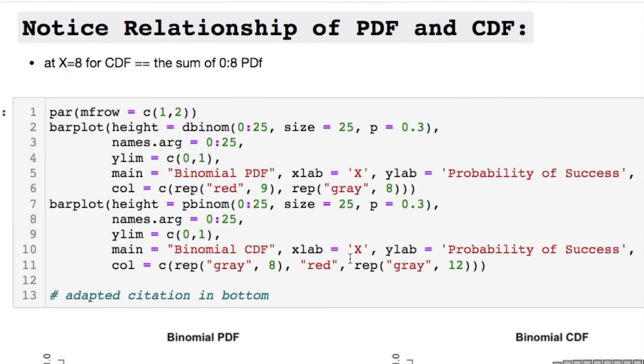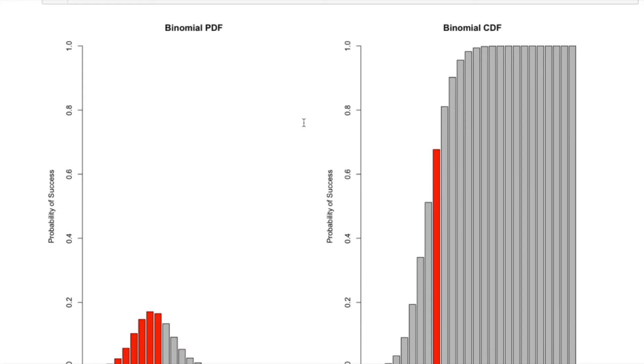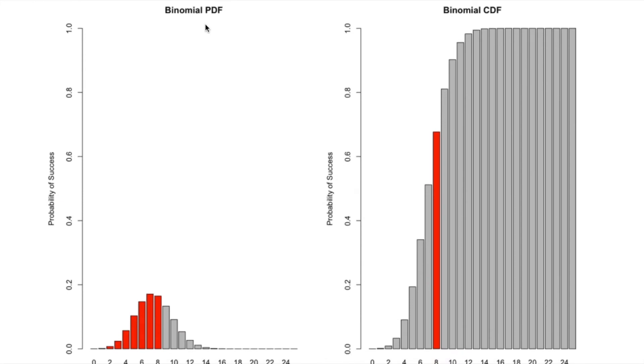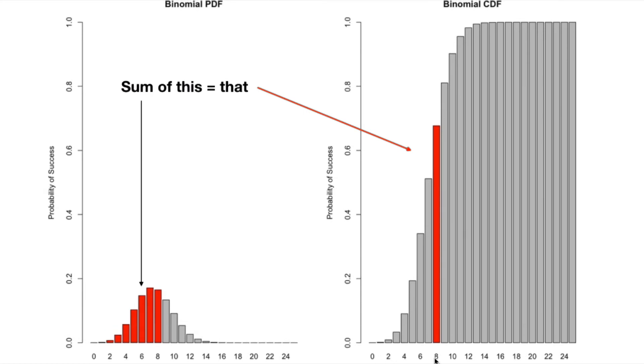Now let's notice the relationship between the PDF and the CDF if we were looking at exactly eight. We would see that the PDF, we would need to sum everything until we reached eight in order to get this one particular line for the CDF representing the same thing.